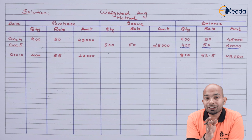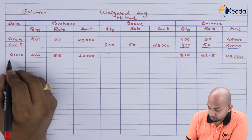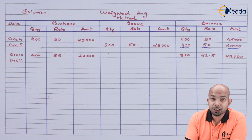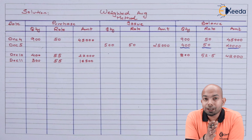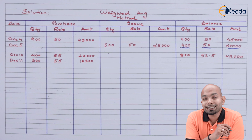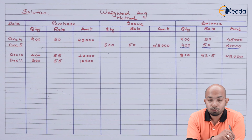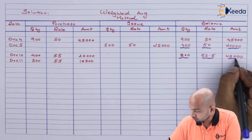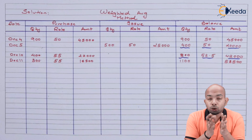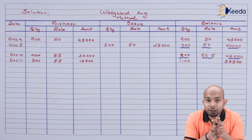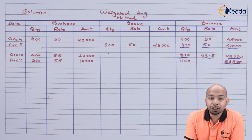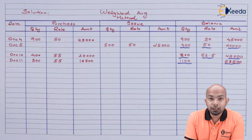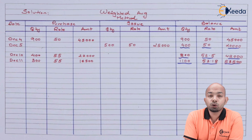After the 10th, the next transaction is on December 11 — another purchase of 300 units at 55 per unit, amounting to 16,500. Adding this to the balance: 42,000 plus 16,500 gives 58,500, and the quantity balance of 800 plus 300 gives 1,100 units. The new effective rate is 53.18.